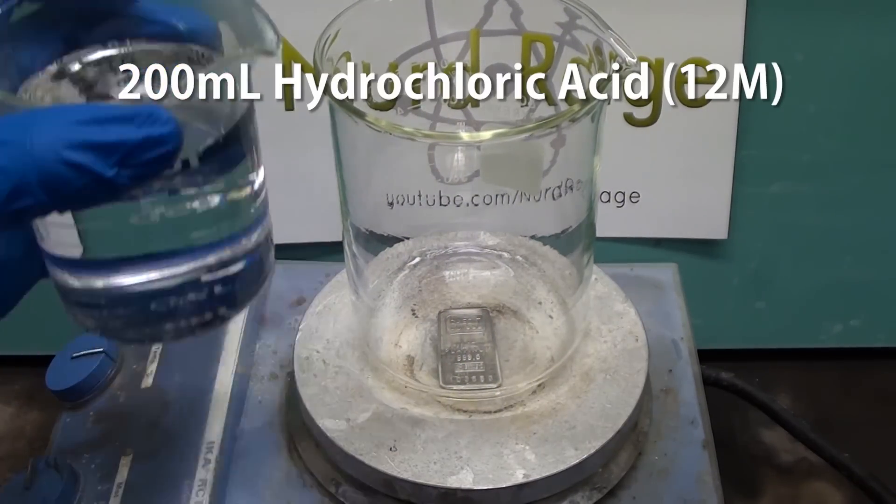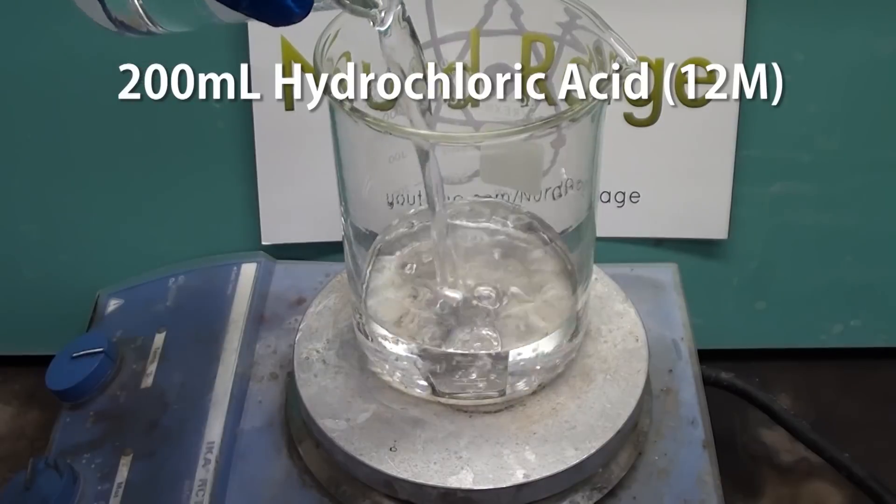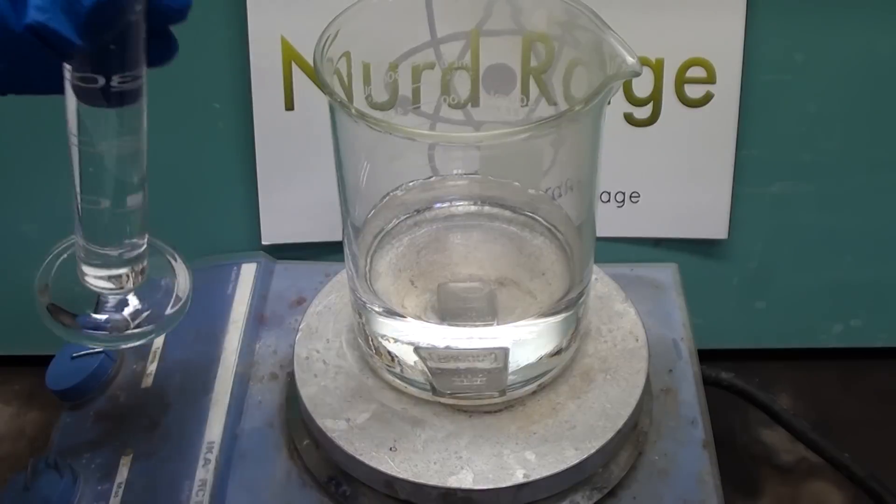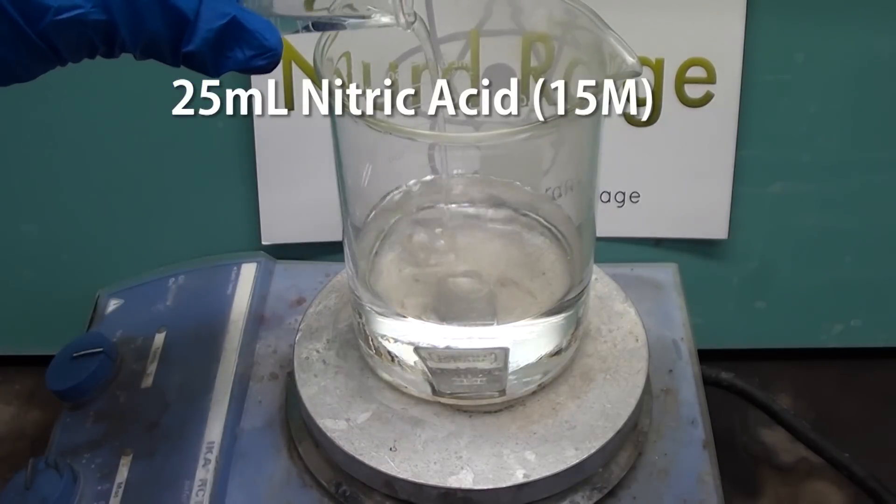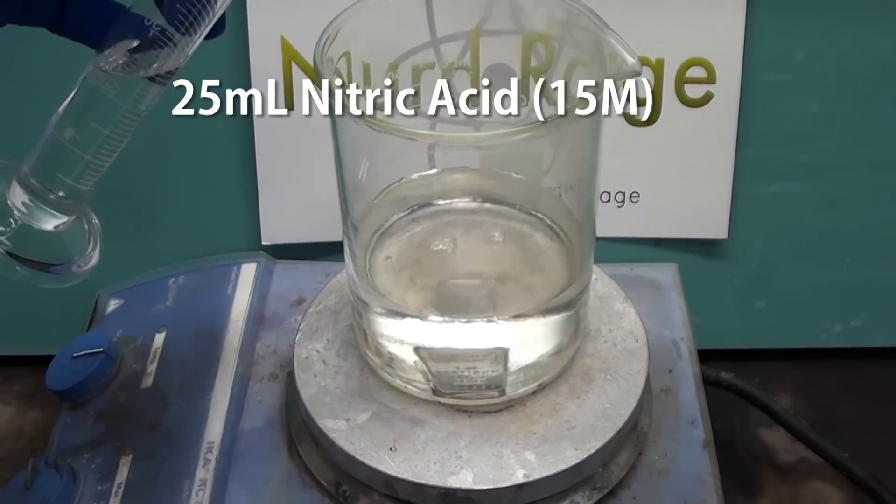Now we add 200 milliliters of concentrated 12 molar hydrochloric acid. To start we'll add 25 milliliters of 15 molar nitric acid, but we'll add more as we need to.